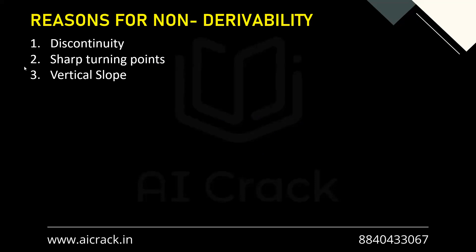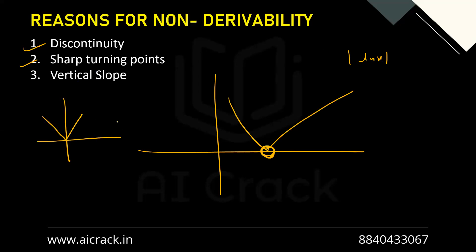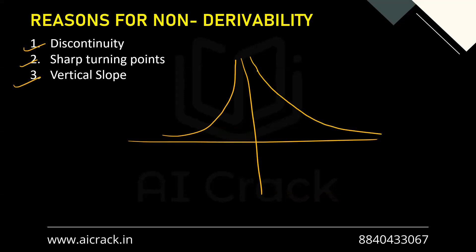The last topic is reasons for non-differentiability. First: discontinuity — if the function is discontinuous, it's straight away non-differentiable. Second: sharp turning points — like |x| or |ln x|, which have a sharp corner at a point, making the function non-differentiable there. Third: vertical slope — if the function has an infinite slope at a point (going to infinity), the limit value is not finite, so the function is non-differentiable. These are the three key reasons.